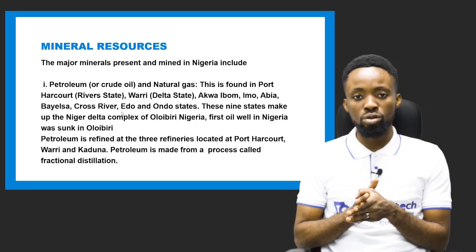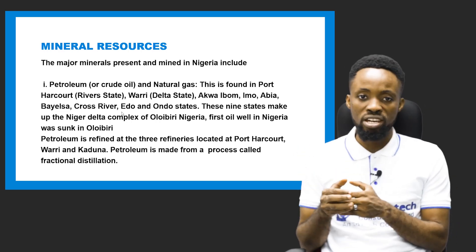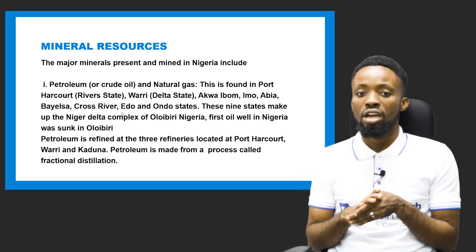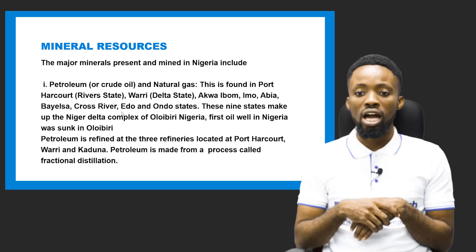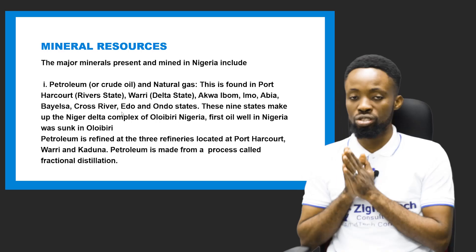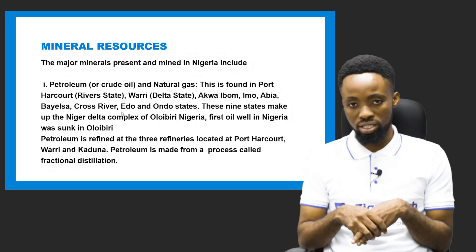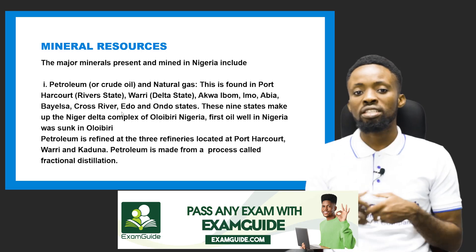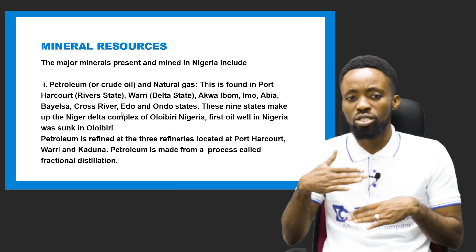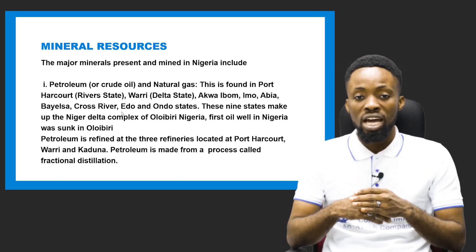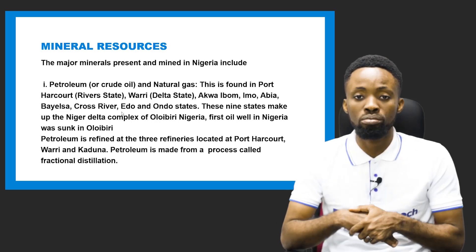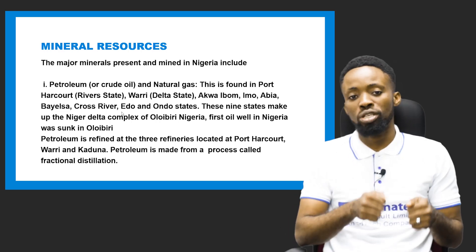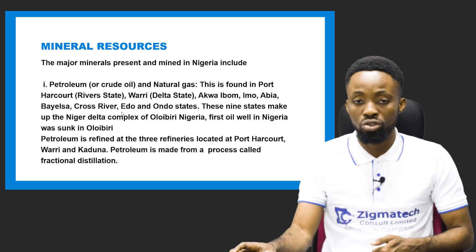In Nigeria we basically have three refineries, though not currently functional: the Port Harcourt refinery at Alesa Eleme, the Warri refinery, and the Kaduna refinery. The process by which petroleum is refined is called fractional distillation. In fractional distillation, they separate the mixtures of petroleum based on temperature. At a certain temperature we get kerosene, at another we get petrol, at another bitumen, and at another diesel. So at different temperatures in the fractionating tower, different petroleum products are realized.